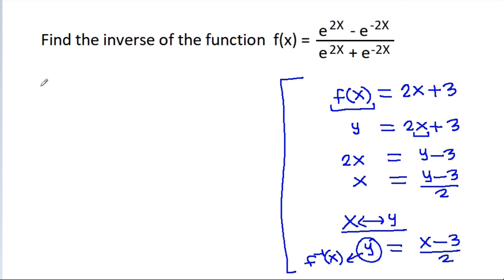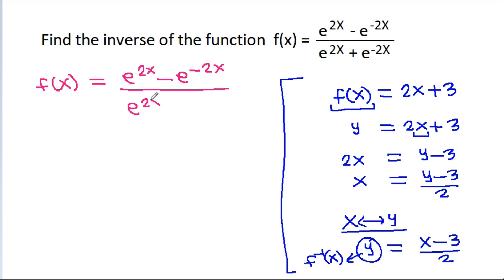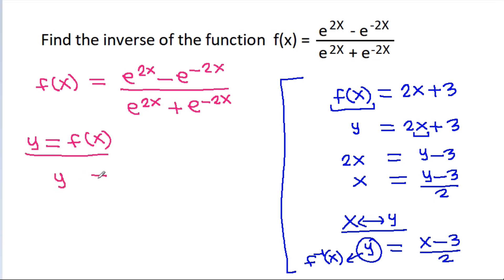We have f(x) = (e^(2x) - e^(-2x)) / (e^(2x) + e^(-2x)). And if we take y = f(x), then y = (e^(2x) - e^(-2x)) / (e^(2x) + e^(-2x)).